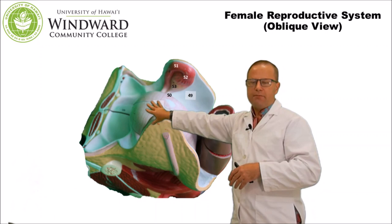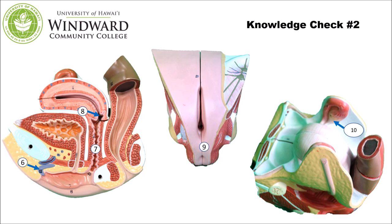You have now reached knowledge check number two. Please pause the presentation to identify structures 6 through 10 of the female reproductive tract and enter these answers into the Socrative.com website under the classroom NAD Lab. Once done, unpause and go on to the next section.